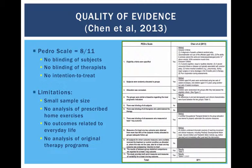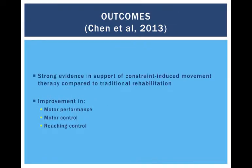I found it interesting that this study was conducted at the same research facility as the previous study but had more limitations. These limitations included small sample size, no analysis of the amount or intensity of home practice prescribed, and no outcomes related to everyday life of the child. They also encouraged the children to continue their original therapy programs throughout the trial but did not assess the amount or intensity of this outside therapy. Despite this, there were large effects in support of constraint-induced movement therapy compared to traditional rehabilitation in motor performance, motor control, and some areas of reach and control. Overall, the paper found that constraint-induced movement therapy does have a positive effect on daily function in relation to movement in children with cerebral palsy.